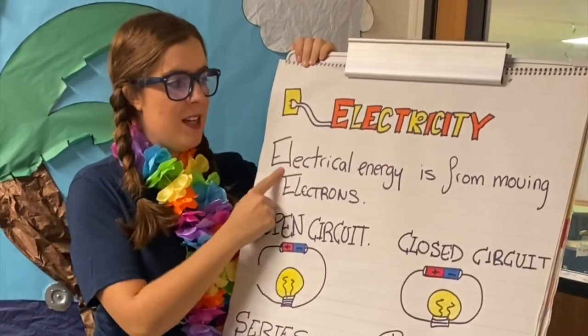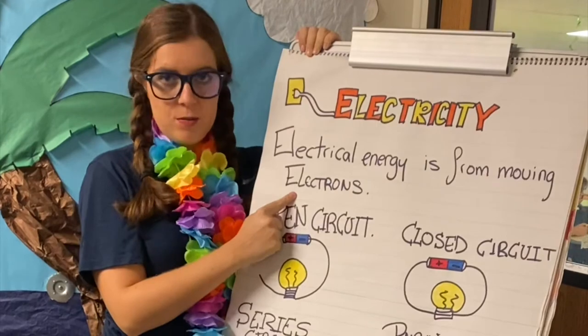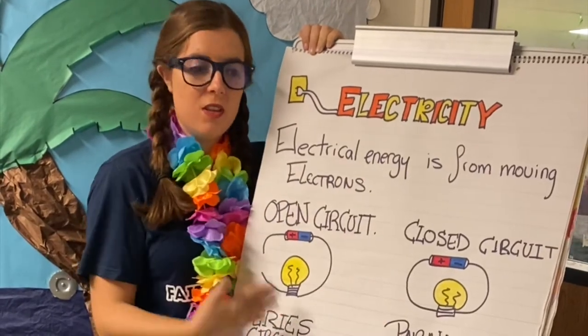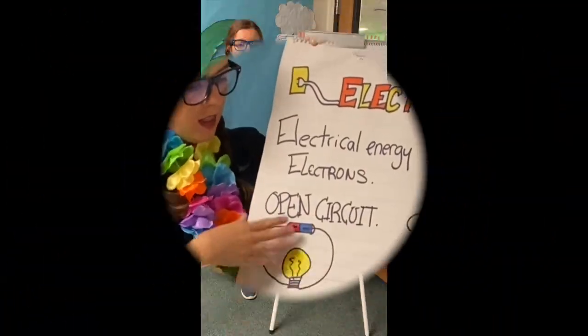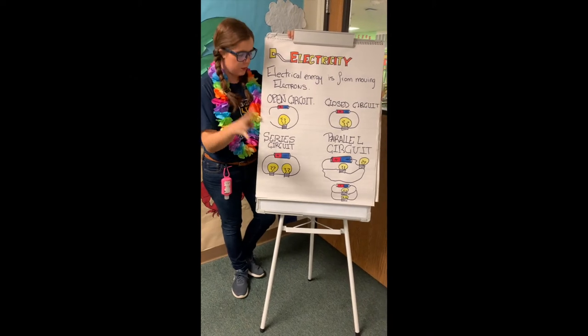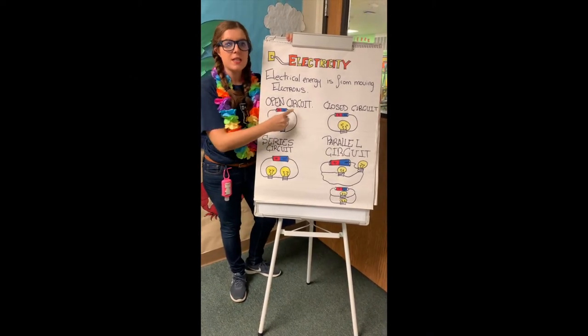Electric energy comes from moving electrons. Here I am going to present you the different kinds of circuits. We have four kinds of circuits. The first one is the open circuit.